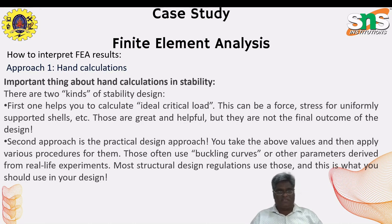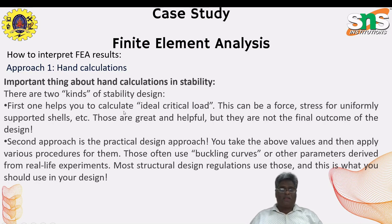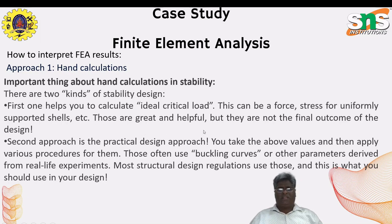Approach one is hand calculation. There are two kinds to consider for stability design. The first helps you calculate the ideal critical load — this can be a force or stress for a uniformly supported shell, etc. These are useful but are not the final outcome of the design. The second is the practical design approach: you take those values and apply various procedures, often using buckling curves or other parameters derived from real-life experiments. Most structural design codes use these, and this is what you should use in your design.